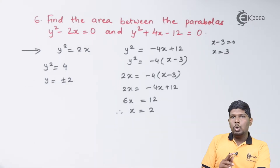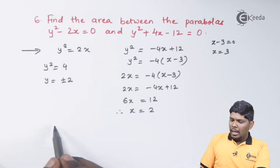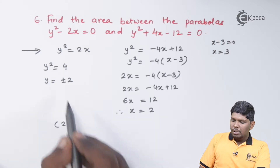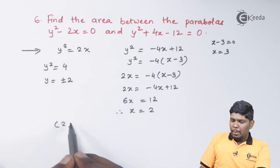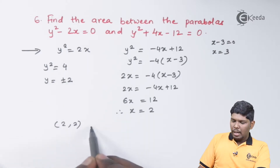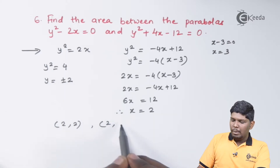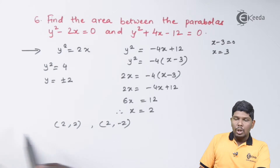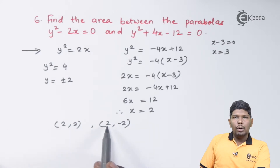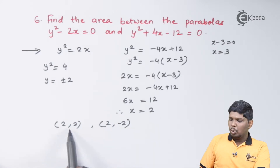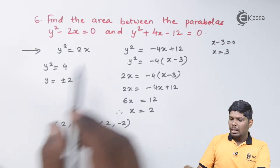There are two points of intersection. When x equals 2, y equals plus 2, and when x equals 2, y equals minus 2. So the two points of intersection are (2, 2) and (2, minus 2).